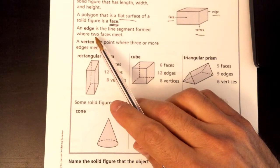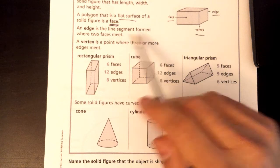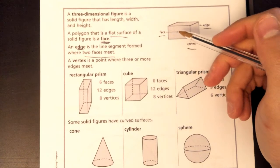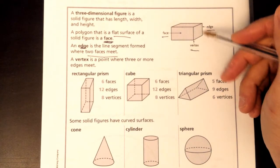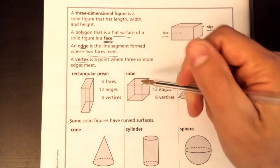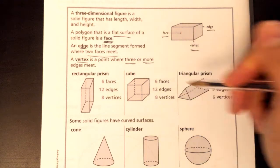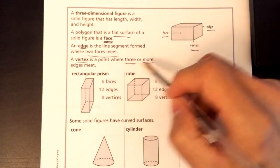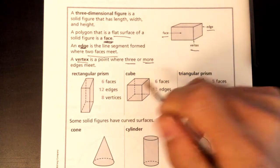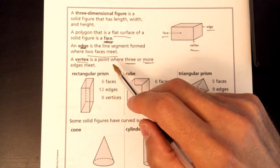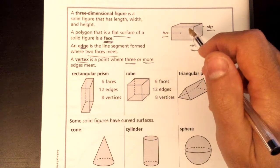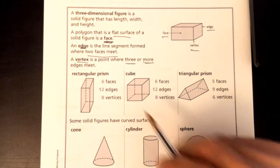An edge is the line segment formed where two faces meet. So an edge is where two flat surfaces meet — that's an edge. A vertex is a point where three or more edges meet. If three or more edges meet, it's a vertex. In a 2D shape, a vertex is just the corner where two edges meet, but in a 3D shape, it's where three or more edges meet.